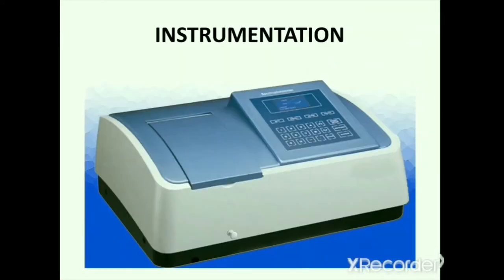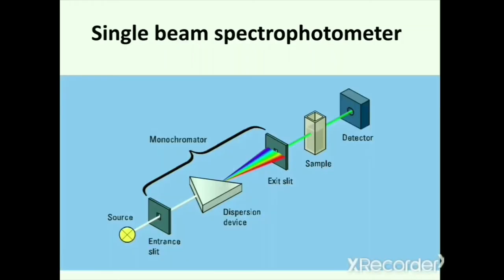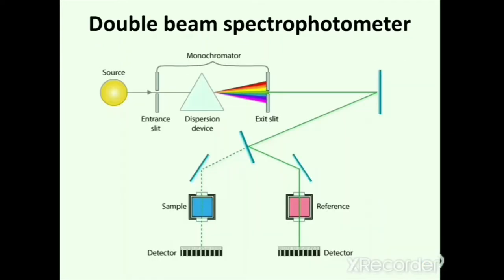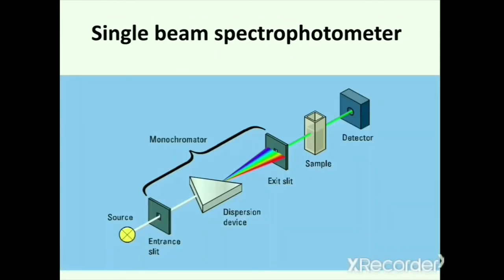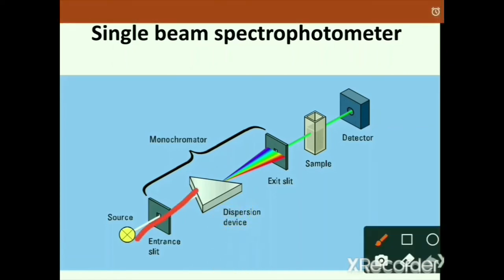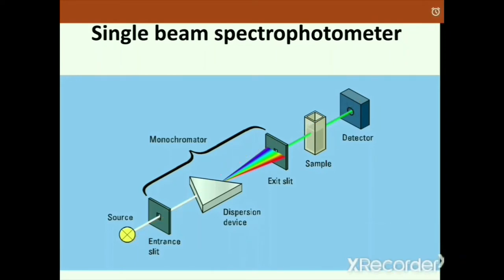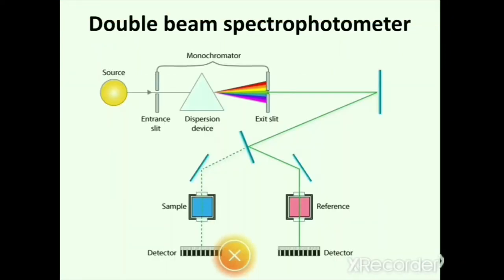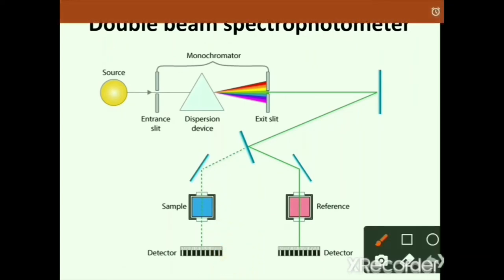The instrument used in UV-Vis spectroscopy is called an ultraviolet visible spectrophotometer. Spectrophotometers are of two types: single beam spectrophotometer and double beam spectrophotometer. The single beam spectrophotometer uses a single beam of light, while the double beam spectrophotometer uses two beams of light.